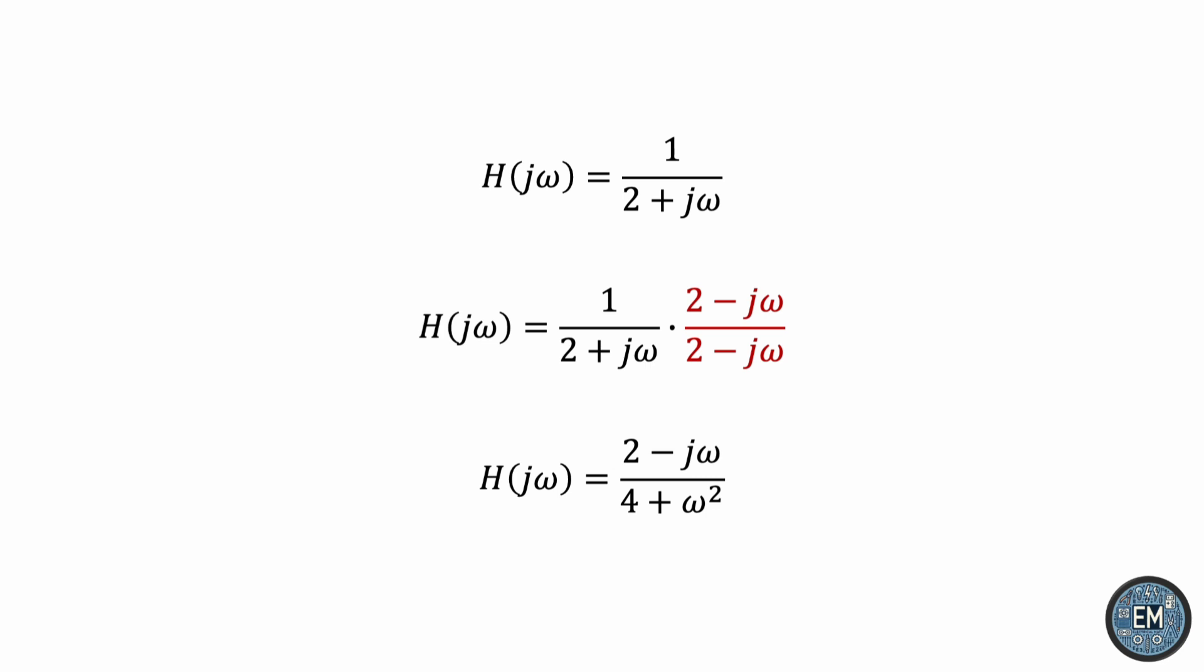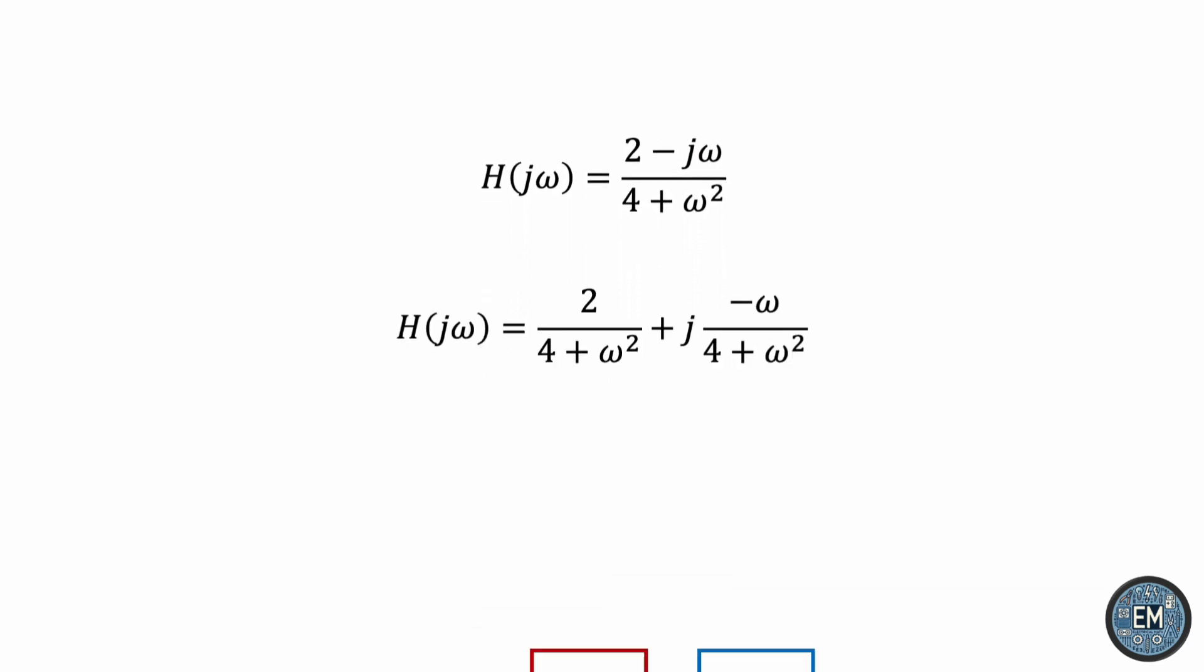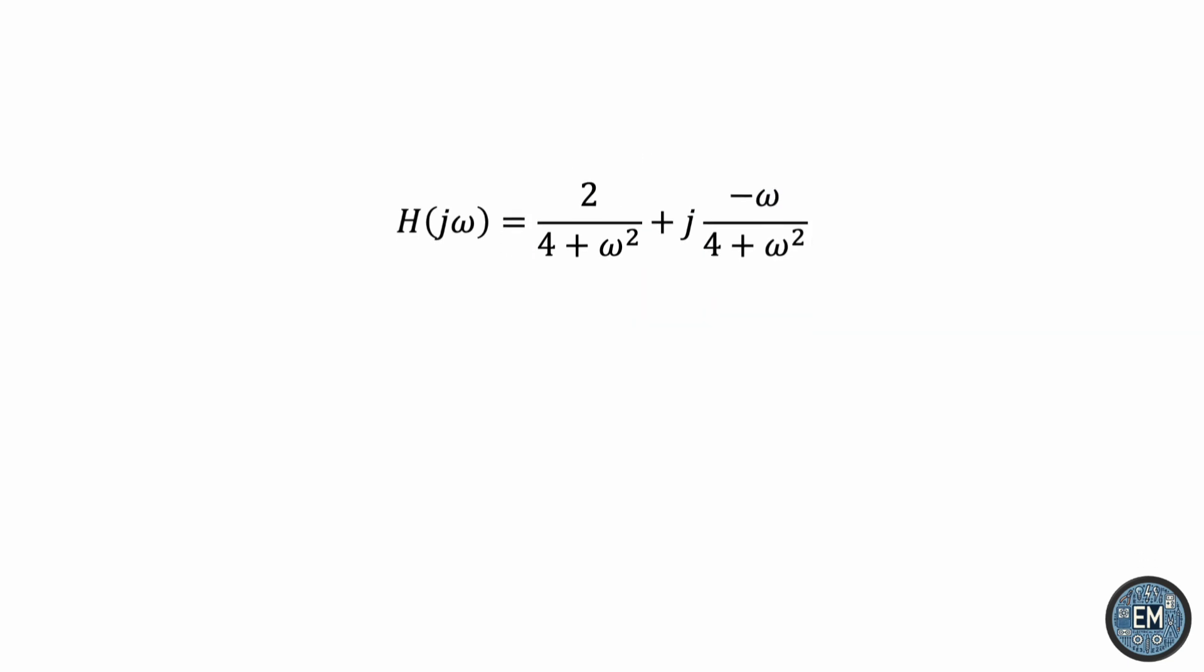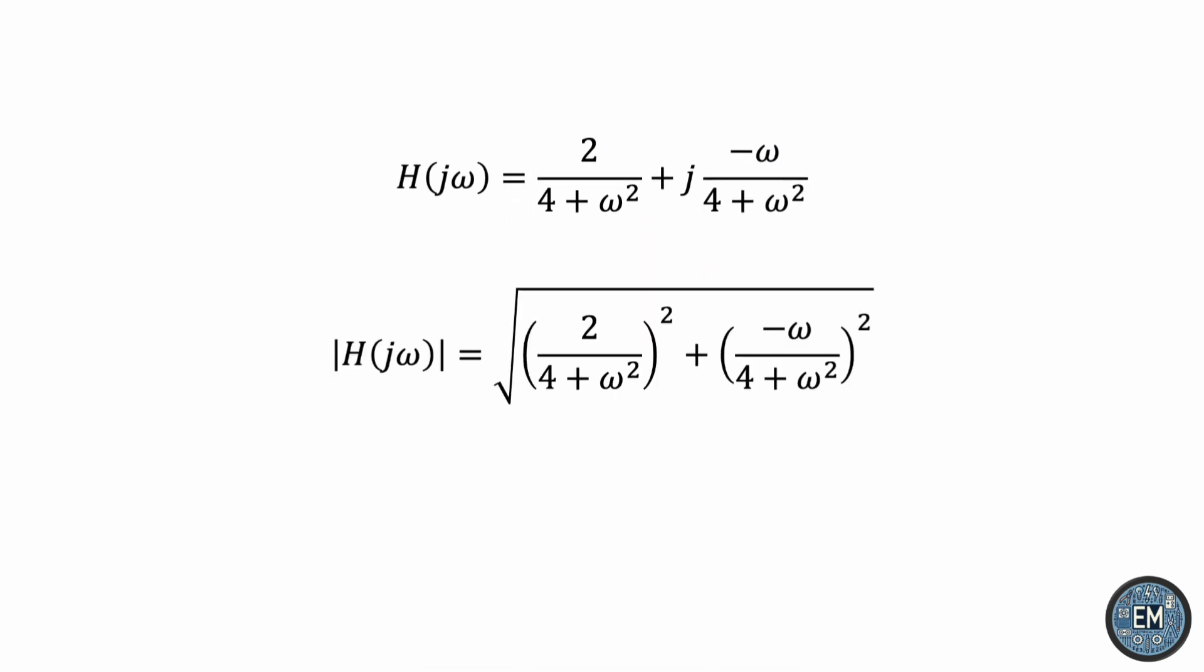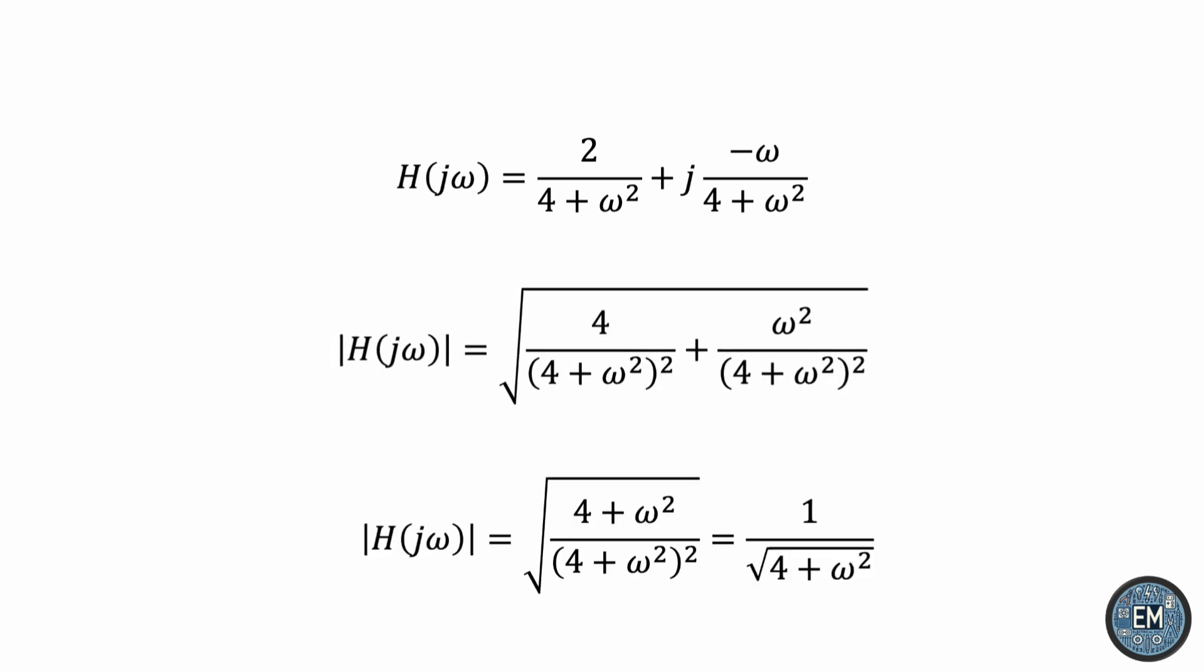We can then split this fraction into a real part and an imaginary part. We are now ready to apply the formulas. So the magnitude would be the square root of real squared plus imaginary squared. We can simplify, combine the fractions, and then simplify once more.